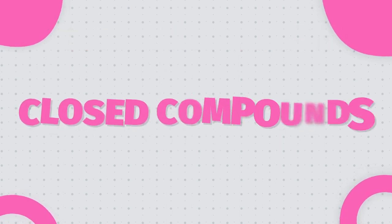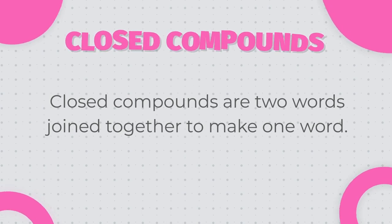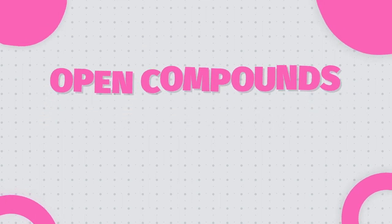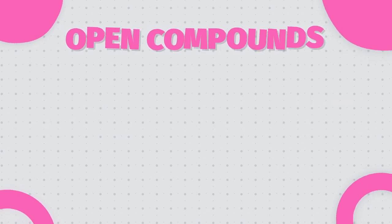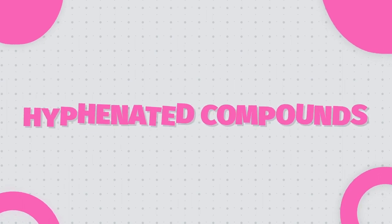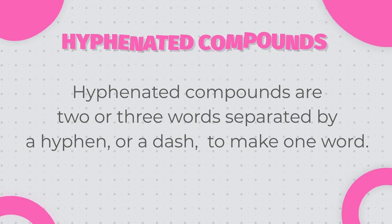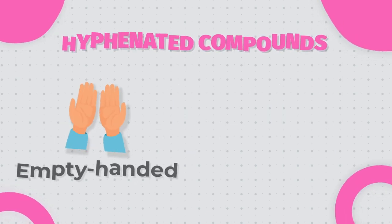First, we have closed compounds. Closed compounds are two words joined together to make one word. Examples are airplane and cupcake. Then we have open compounds — two words separated by a space to make a new word. Examples are peanut butter and full moon. Then the third type is hyphenated compounds — two or three words separated by a hyphen or a dash to make one word. Examples are empty-handed and t-shirt.